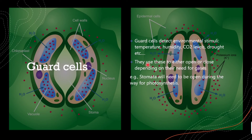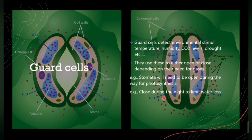For example, the stomata will need to be open during the day for photosynthesis, because the plant needs to get carbon dioxide in as a reactant for photosynthesis. During the night, they'll need to close to limit water loss.